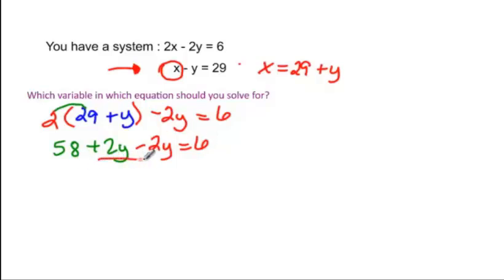So combining like terms, 2y minus 2y, again they cancel each other out, and we have 58 equals 6, which is a false statement.